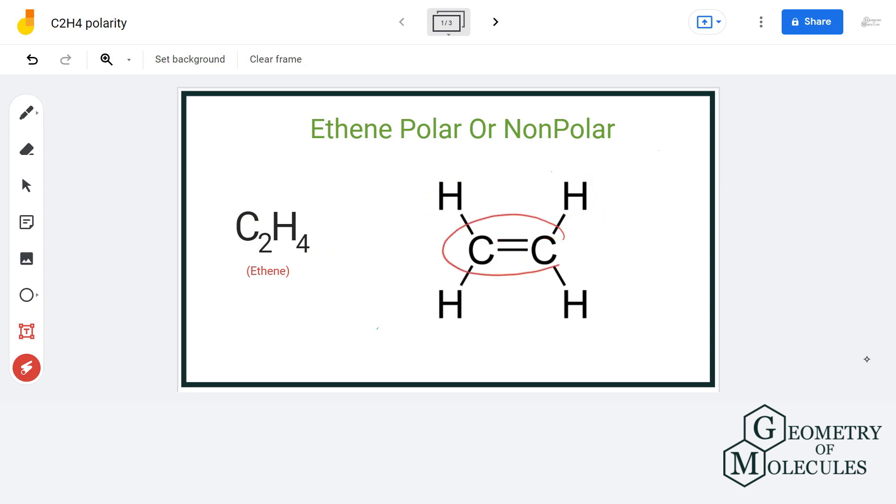Its structure consists of two carbon atoms bonded together with a double bond and has four hydrogen atoms. The electronegativity of carbon is 2.55 and that of hydrogen is 2.2. When we calculate the difference, we get the value of 0.35.